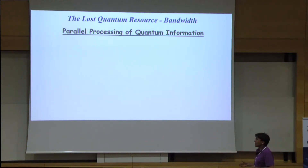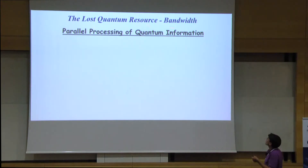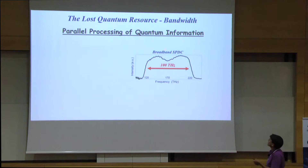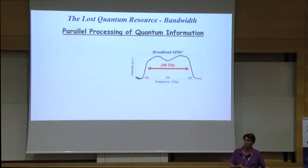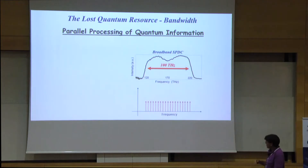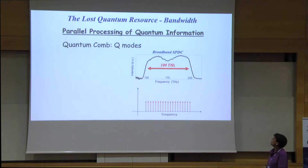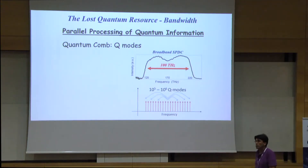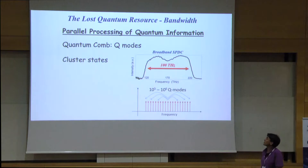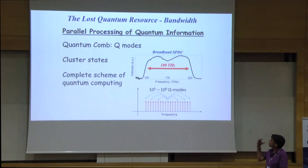We can make extremely broadband squeezed light. You could think of this as entangled photons, or at higher power, squeezed light. If you have this coming out of an OPO, it's actually a comb of many, many modes — they're quantum modes, they're entangled. You have pairs, 100,000 or a million of them. As Olivier will probably tell us, you can make beautiful cluster states and complete schemes for quantum computing out of them.